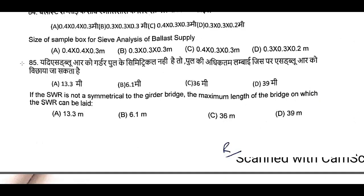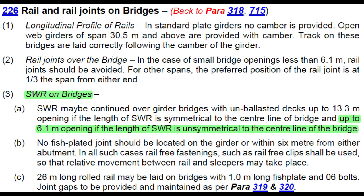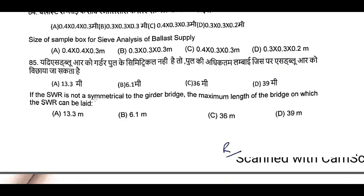Question Number 85: In SWR, if it is not symmetrical to the Gardar Bridge, what is the maximum length of the bridge on which the SWR can be laid? If SWR is symmetrical, the span is 13.3 meters; whereas if it is not symmetrical, the maximum length of the bridge is 6.1 meters. Question Number 85, B is the correct answer: 6.1 meters.